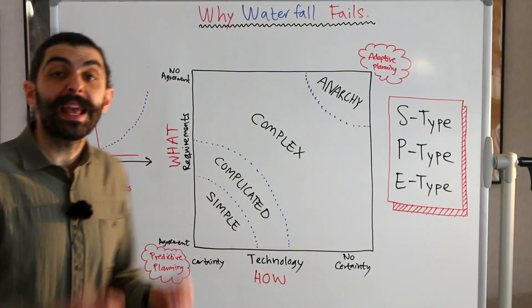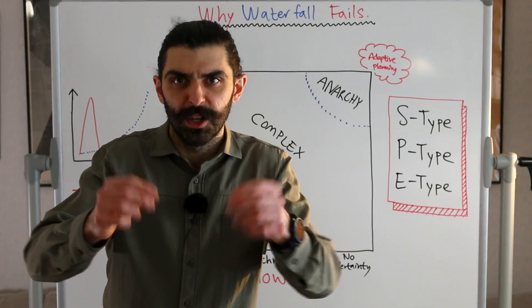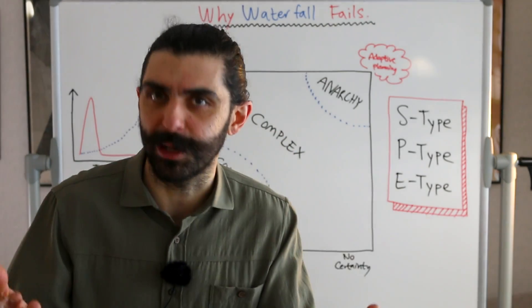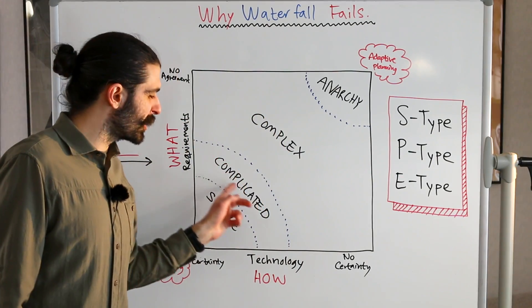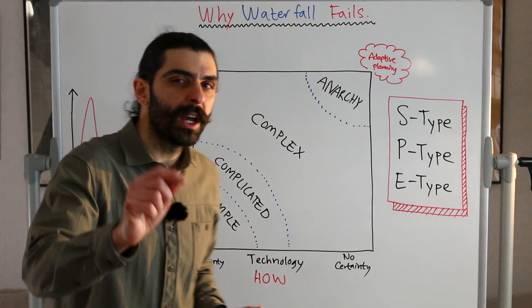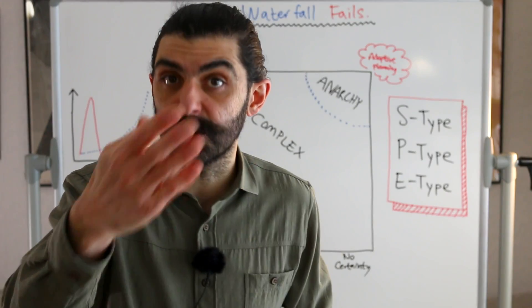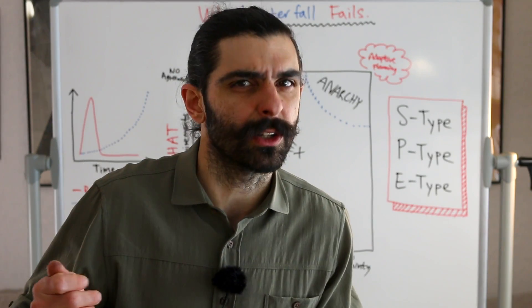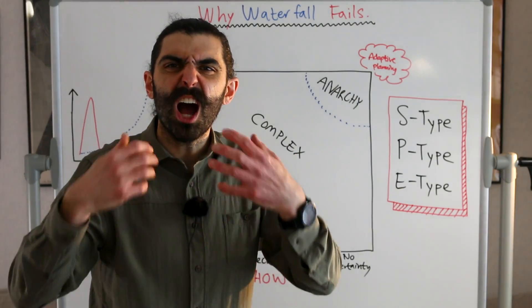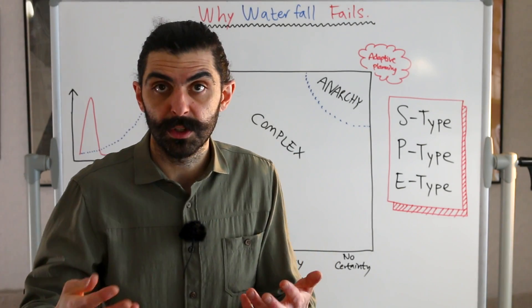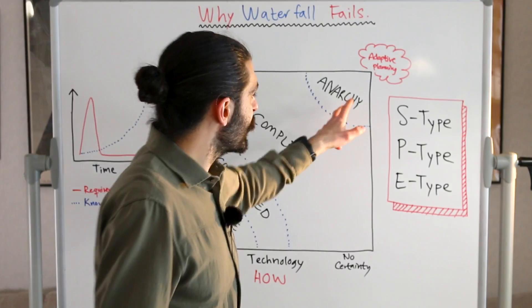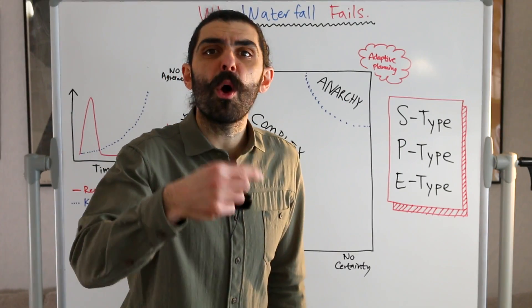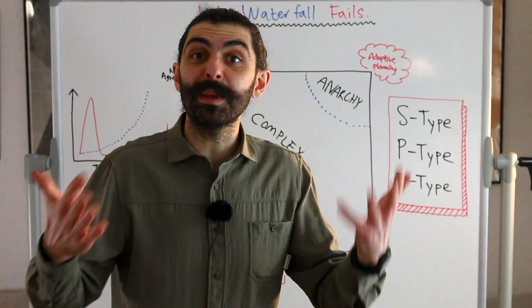In the simple zone we have known knowns — we know what we need to know, and we know it; we know the questions and we know the answers. In the complicated zone we have known unknowns — we know what we need an answer to, but we don't know the answers. In the complex zone we have unknown unknowns — we don't even know what we need to know. And what is worse than unknown unknowns? In the anarchy zone you have unknowables — things that fundamentally can't be known.